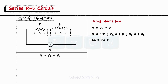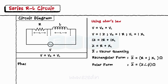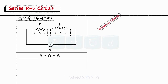Thus we get the equation Z equals R plus XL. Z is represented as a vector quantity and equals Z-bar equals R plus j·XL in rectangular form, or Z-bar equals Z angle phi in polar form. This phi is the phase angle, calculated as phi equals tan inverse of XL upon R.